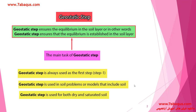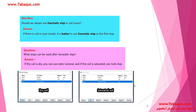It is used both for dry and saturated soils. A question has been posed: do we always need to use a geostatic step for matters involving soil? The answer is that if there is any soil in the model, it would be better to use geostatic as step one.